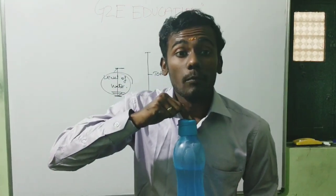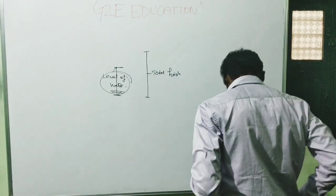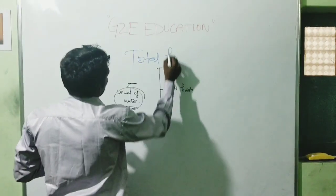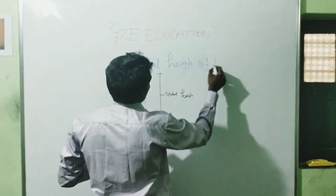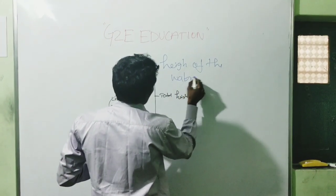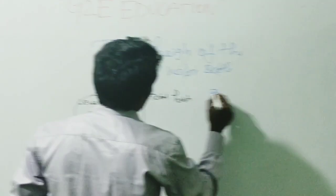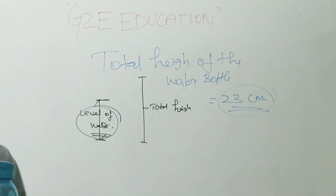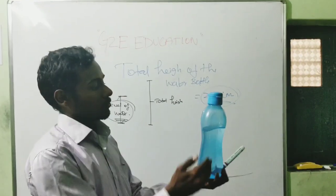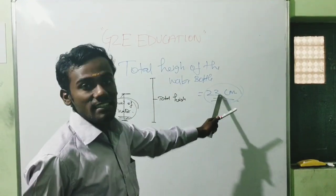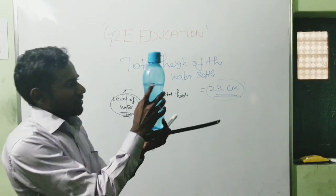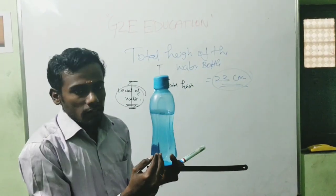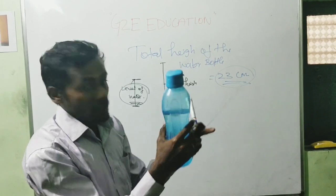The total height of the water bottle is 23 centimeters. Okay, the total height of the water bottle is 23 centimeters. And we mark one level — did you see? We mark the level. So what is the level? Let's check what is the level.